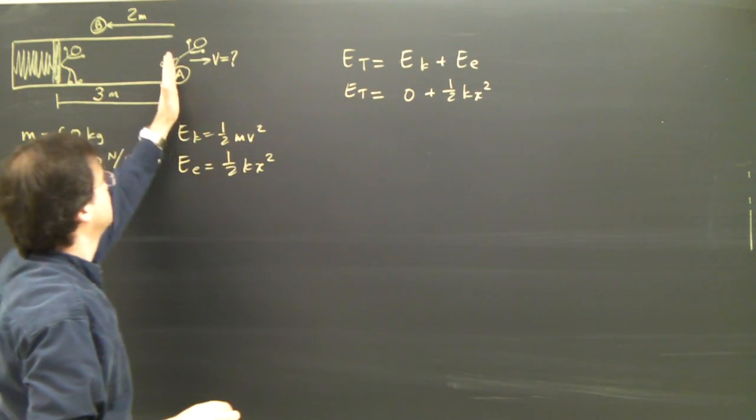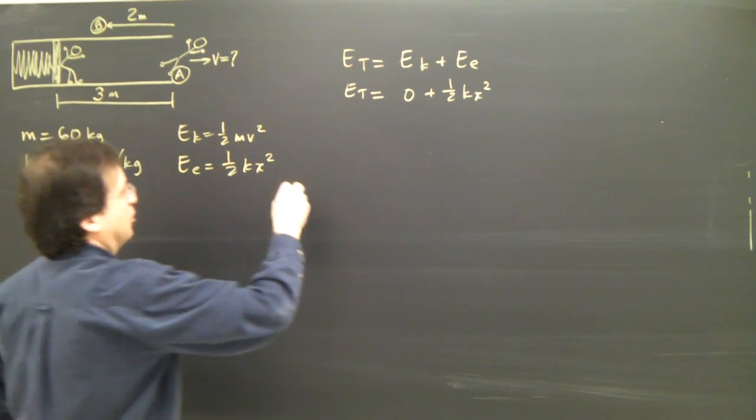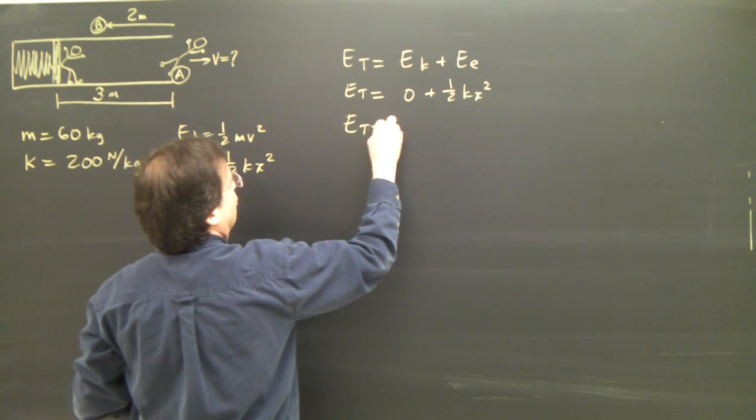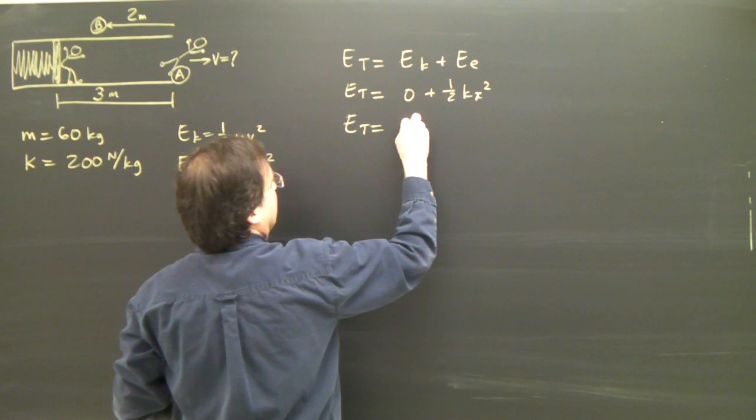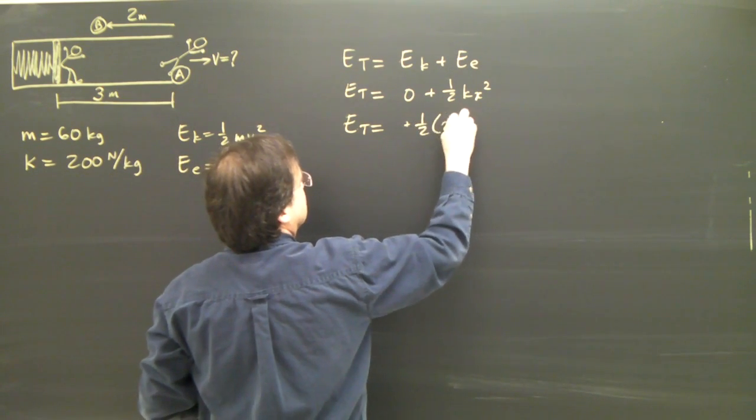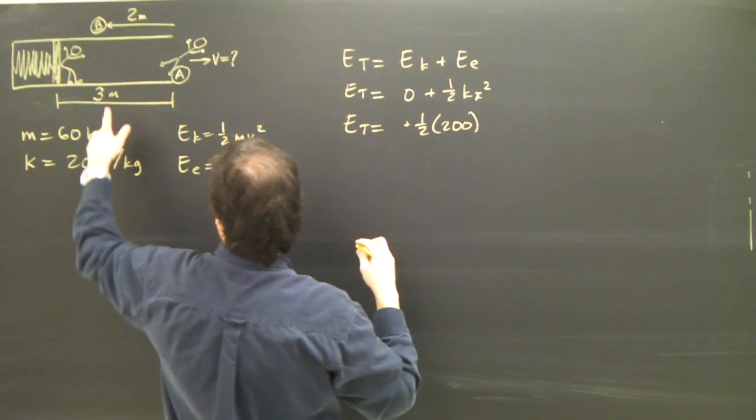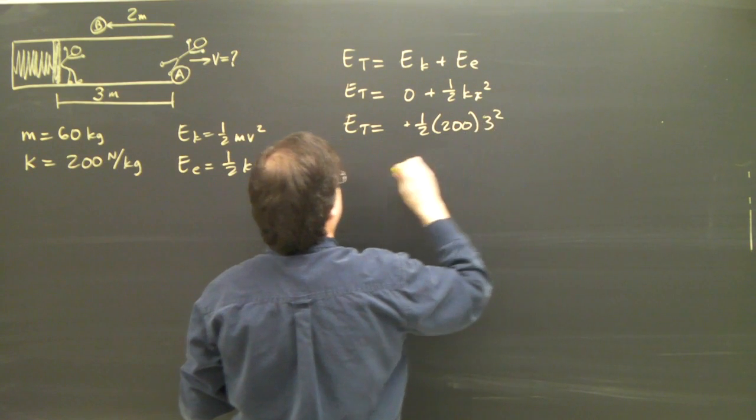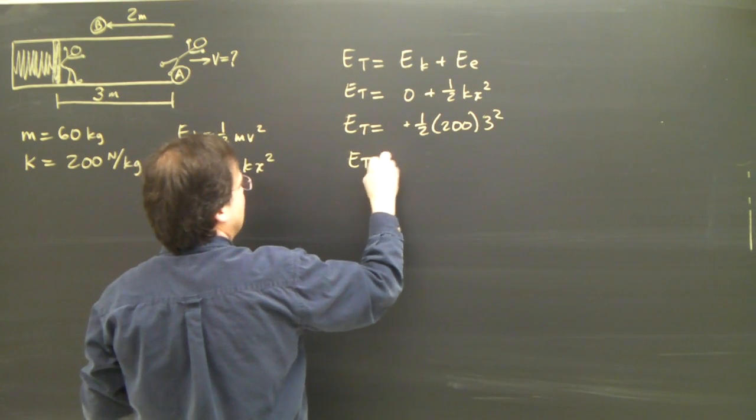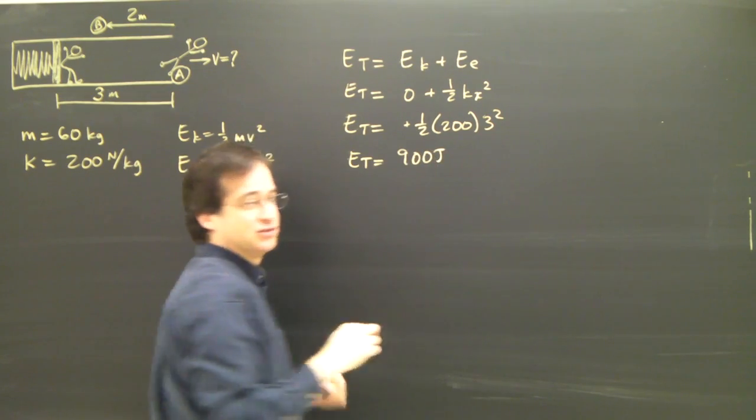In this case the spring has been compressed three meters. So plug in the numbers. The total energy is zero plus one half times 200. And what's the compression? Three meters, three squared. The total energy is 900 joules.